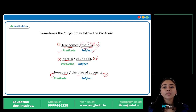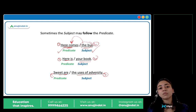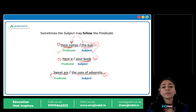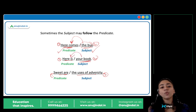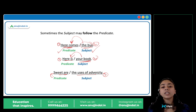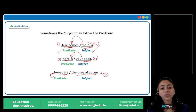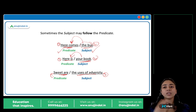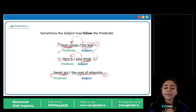'The bus' is the subject and 'here comes' is the predicate. 'Your book' is the subject and 'here is' is the predicate. 'The uses of adversity' is the subject and 'sweet are' is the predicate. So in all these cases, the predicate came first and the subject came after.